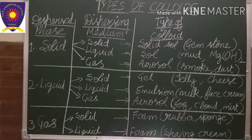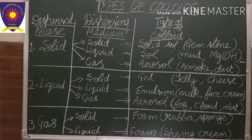Now when liquid acts as the dispersed phase — when liquid is dispersed in a solid, it is known as a gel. Examples are jelly, cheese, and butter.